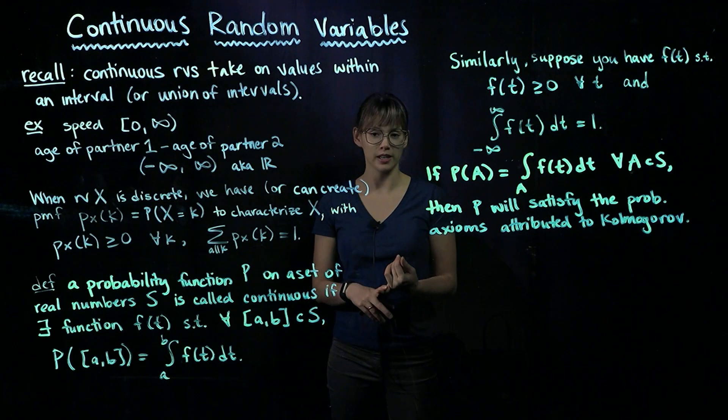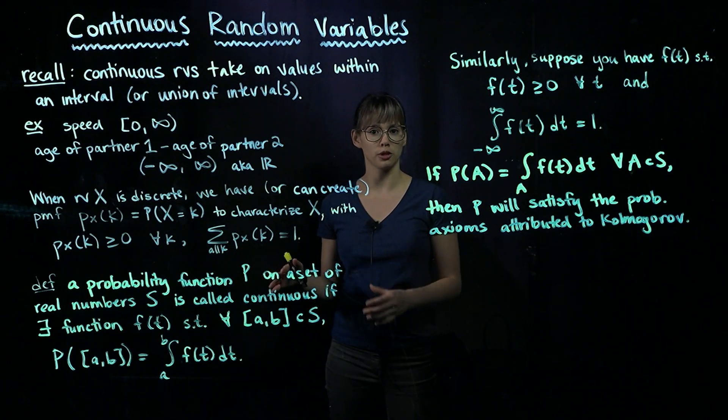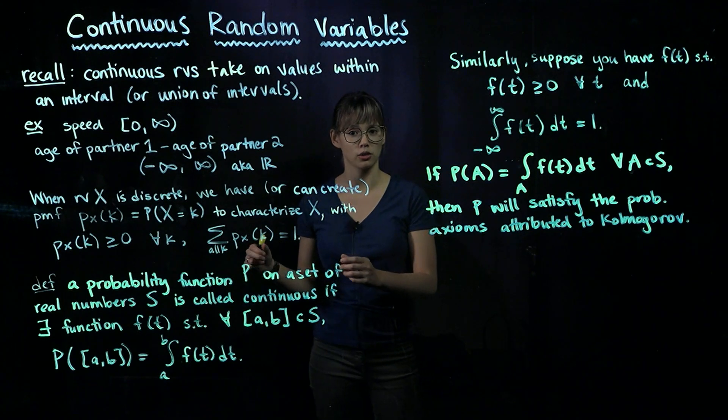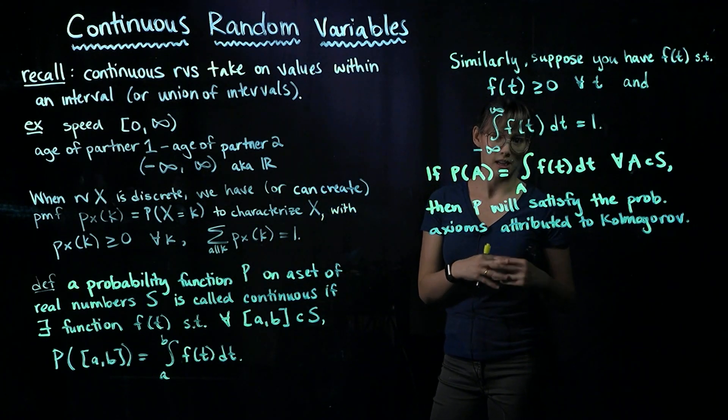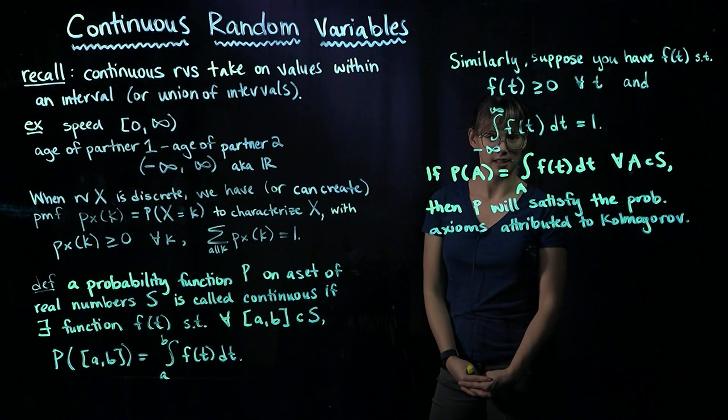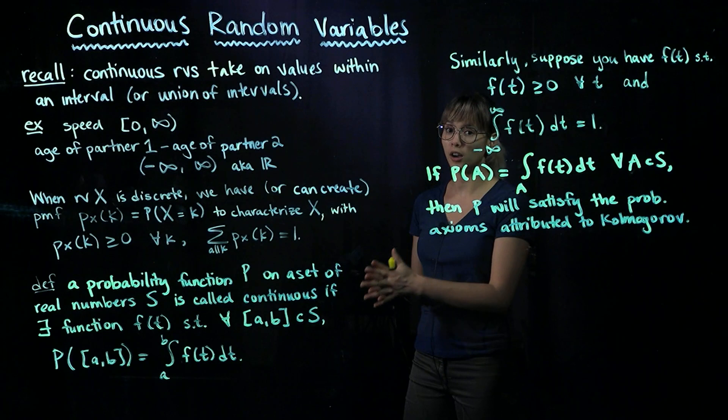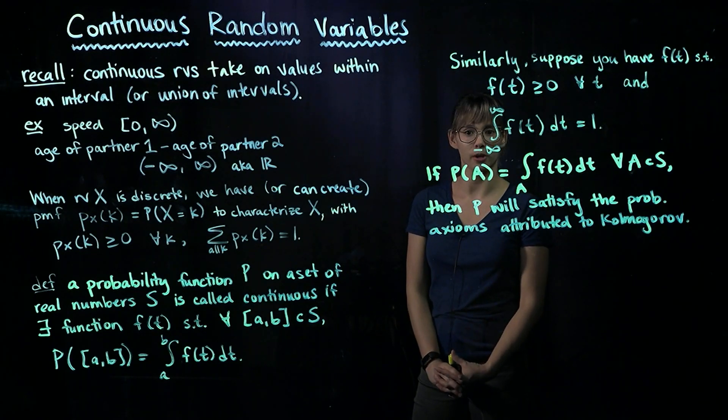Remember that we have discrete random variables and continuous random variables. For discrete random variables, we can have a finite number of values or a countably infinite number of values that it takes on. For a continuous random variable, there are uncountably many values that this continuous random variable could take on.